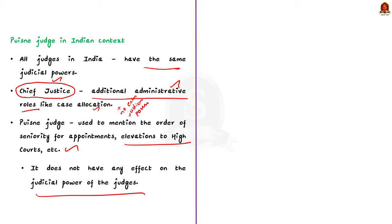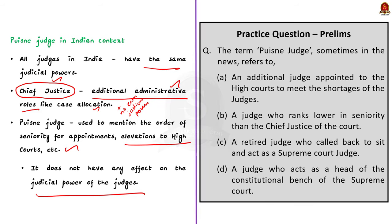To sum up: the term puisne judge is used to refer to the seniority of judges for the purpose of appointment and elevation, and the term does not bear any effect on the judicial power of the judges. Only the Chief Justice of the court will have extra administrative power, not judicial power. That is all regarding this discussion.